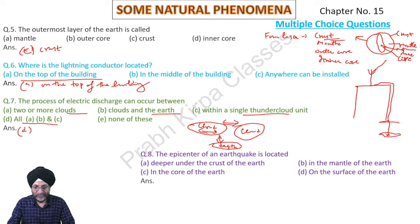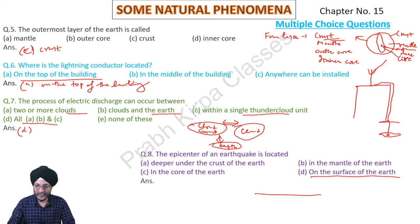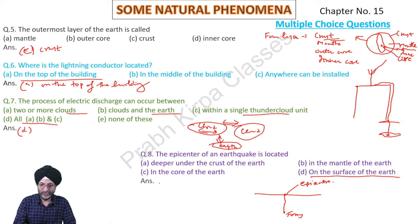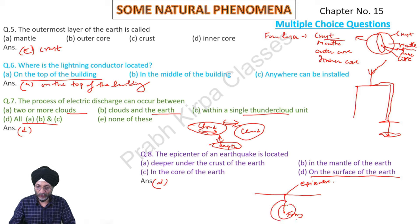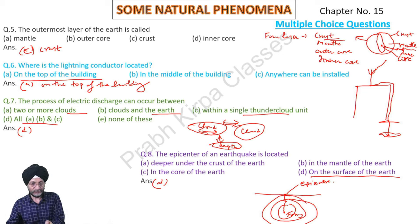The epicenter of an earthquake is located on the surface of the earth. The focus is located below the surface, and the area just above the focus on the surface is called the epicenter. From the epicenter, seismic waves move outward from the focus of the earthquake.